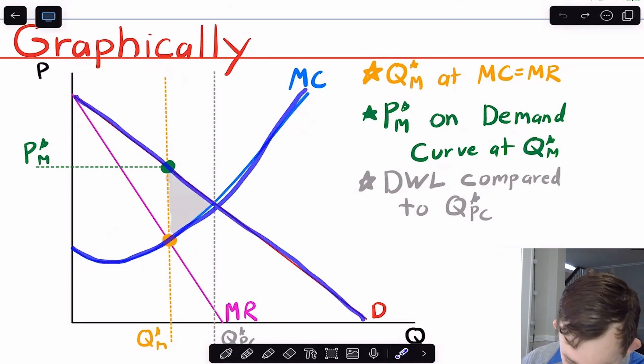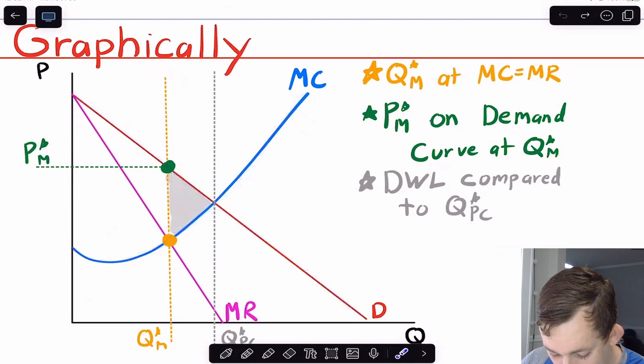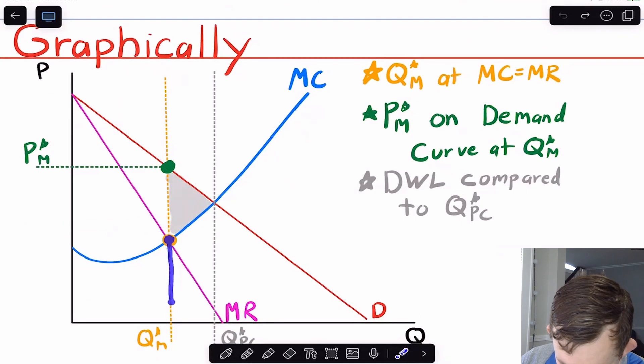We have a marginal cost curve that looks like this. What we're going to do to find the optimal quantity is we're going to solve the profit maximization problem. And so we're going to say marginal cost equals marginal revenue. And so that is at this point right here. But that just tells us the quantity.